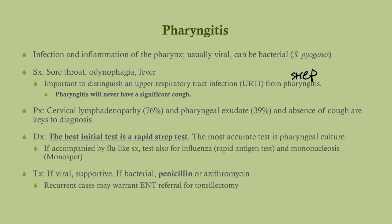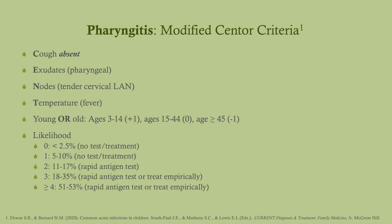If flu-like symptoms are present, also test for influenza with the rapid antigen test. Mononucleosis looks very similar — sore throat and lymphadenopathy — so test with the monospot test as well. The Modified Centor Criteria helps stratify likelihood of strep: absent cough, pharyngeal exudates, anterior cervical lymphadenopathy, and fever each score a point. Age 3–14 adds a point; age over 45 subtracts a point. This gives you the likelihood of strep infection.